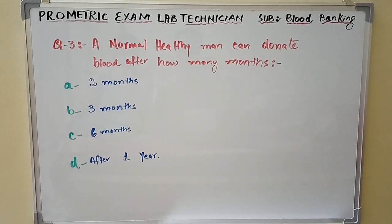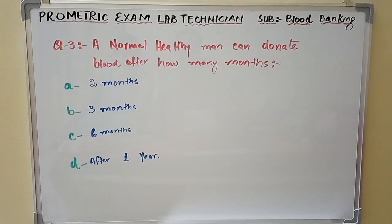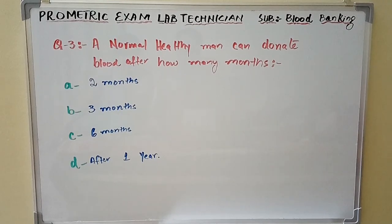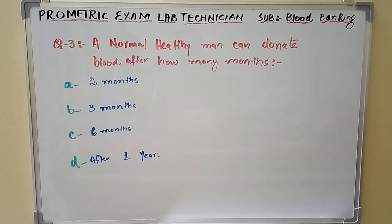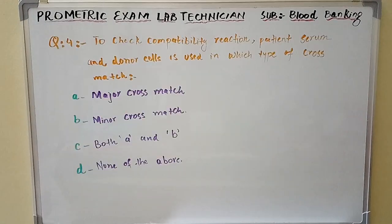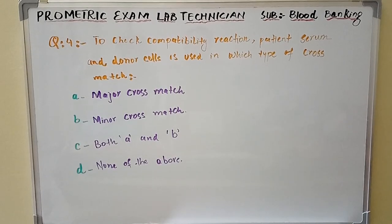Option A: two months. Option B: three months. Option C: six months. Option D: after one year. Question number four: To check compatibility reaction, patient serum and donor cells is used in which type of cross match?